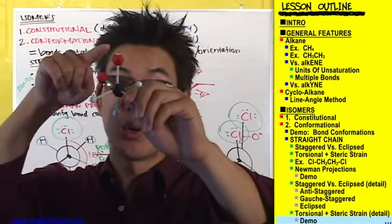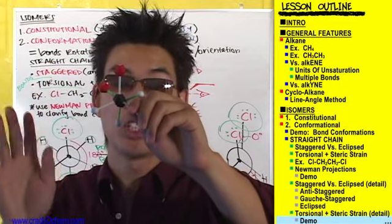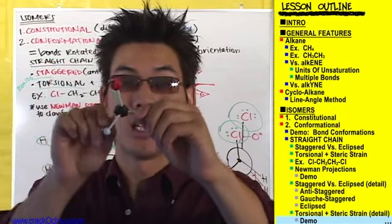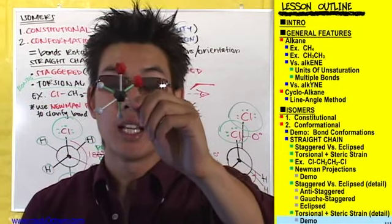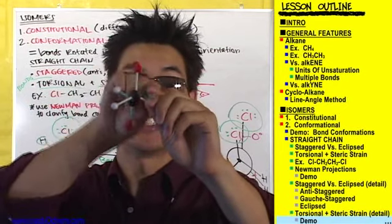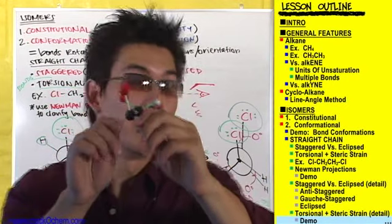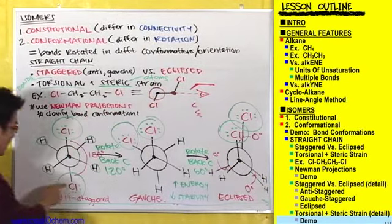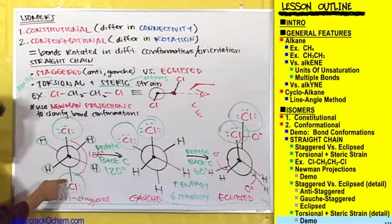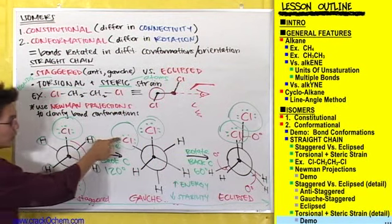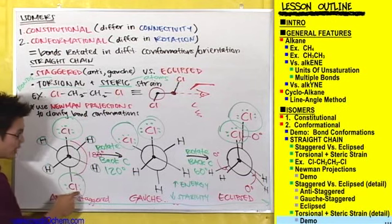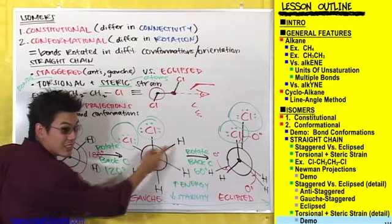I chose to rotate this thing clockwise in this example, but we could have also just as well rotated it counterclockwise, and you'd still end up with a gauche staggered conformation. I just wanted to keep things consistent with how we drew them on the board — we rotated the back carbon 120 degrees clockwise, which is how this chlorine ended up in this position. If you had rotated counterclockwise, this chlorine would have ended up in a different position.